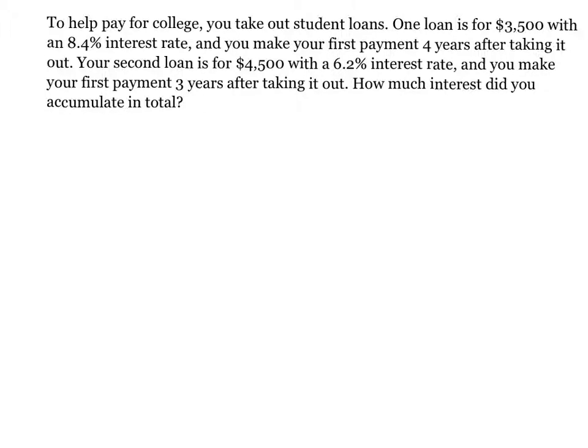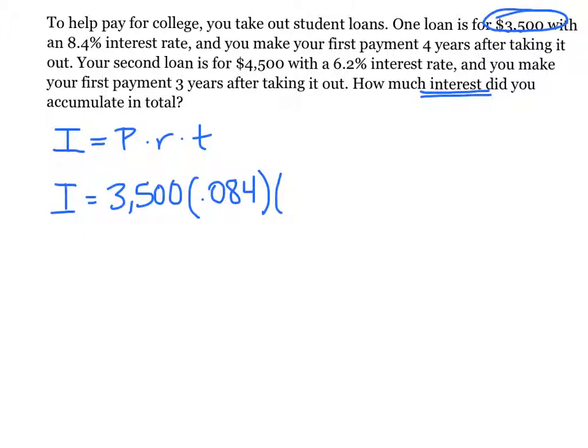So let's first look at the first loan for $3,500, and we're trying to find interest, which we know how to do. Interest formula, I equals P times R times T. Interest on our first loan is the investment amount, $3,500, times our rate .084, times the time, four years. That ends up with I equaling $1,176.